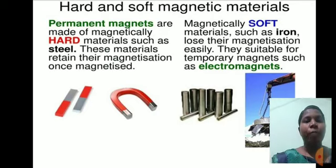Permanent magnets are made of magnetically hard materials such as steel. These materials retain their magnetization once magnetized. Magnetically soft materials such as iron lose their magnetization easily. They are suitable for temporary magnets such as electromagnets.